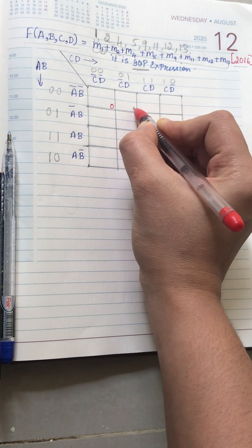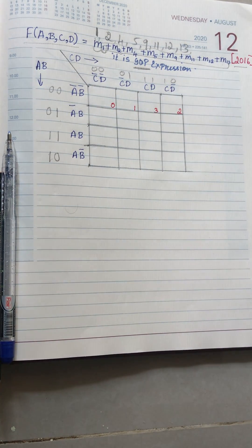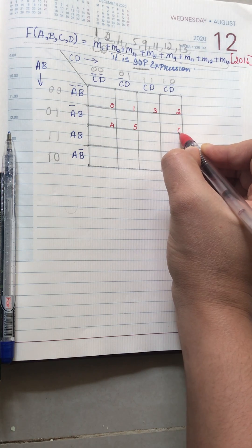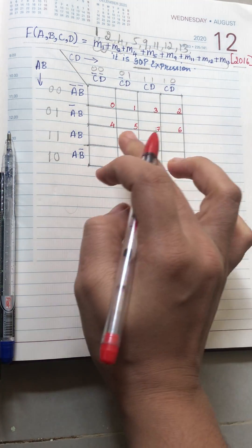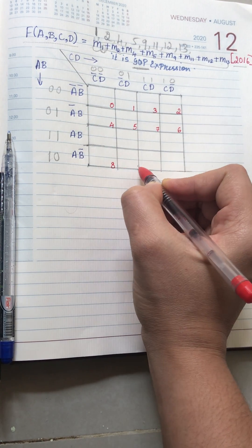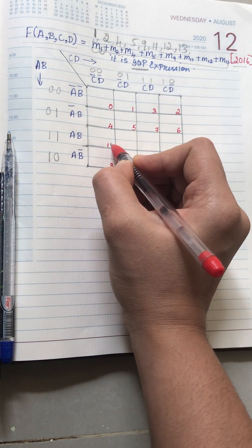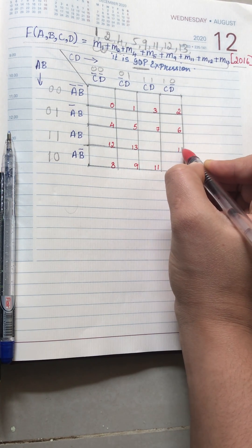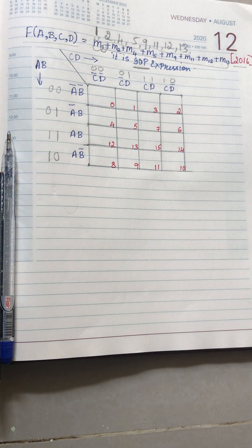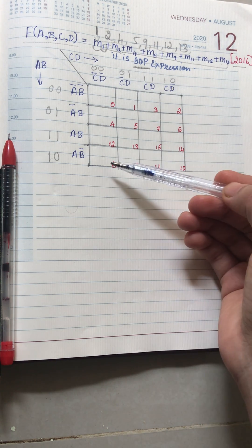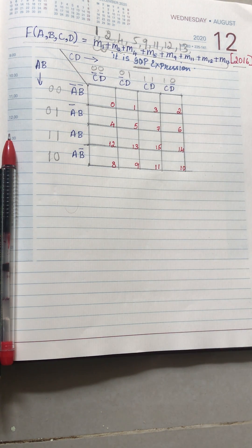Now we are going to enter the cell numbers inside the K-map. We start with 0, 1, 2, 3 in the first line; next line is 4, 5, 6, 7; then the last line is 8, 9, 10, 11; and the third line is 12, 13, 14, 15. You might wonder why the last line comes before the third line — this is the standard form of K-map and you cannot change this.